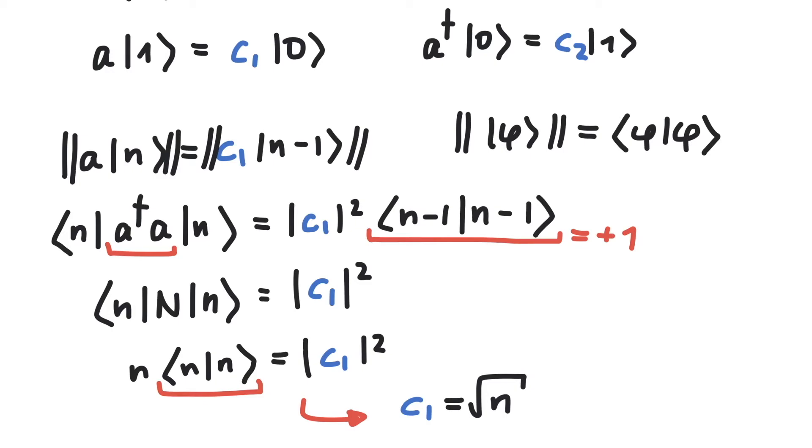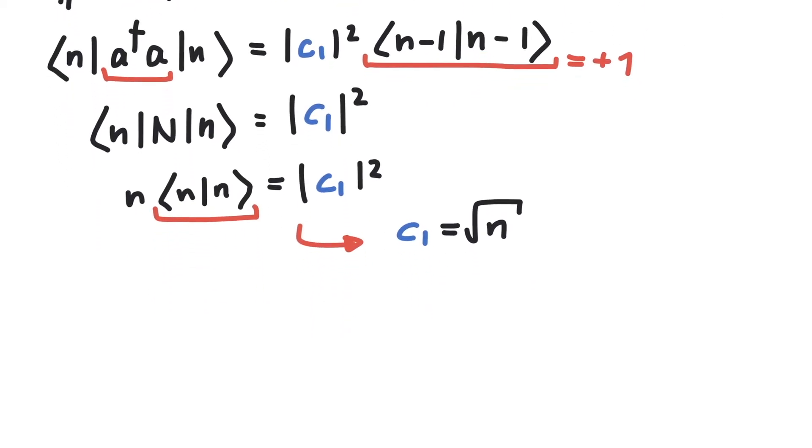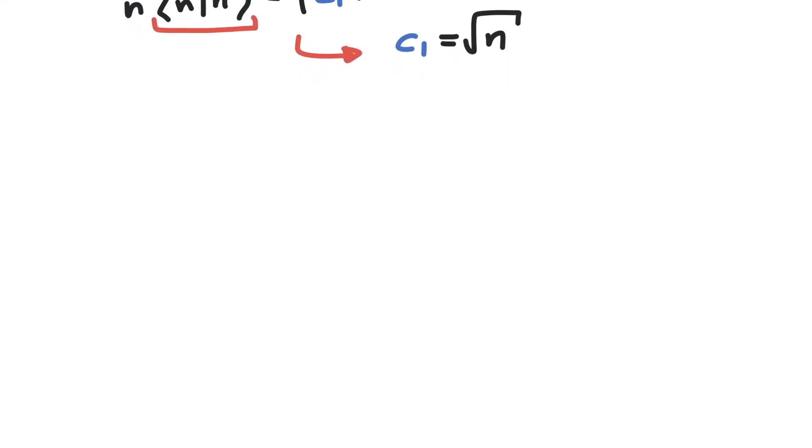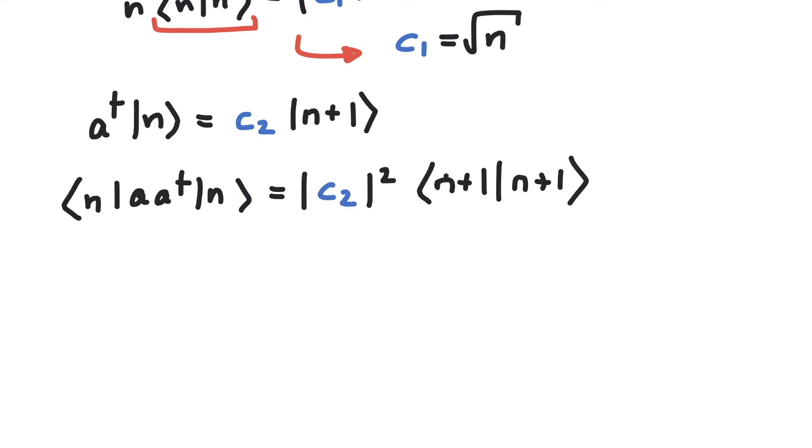Now let's do the same calculations for c2, so we can see what is the constant if we apply the creation operator. This is very similar to the calculations we did before, so the first thing to do is taking the norm on both sides. The term on the right side is plus 1, and these terms here can be written differently using the commutator.